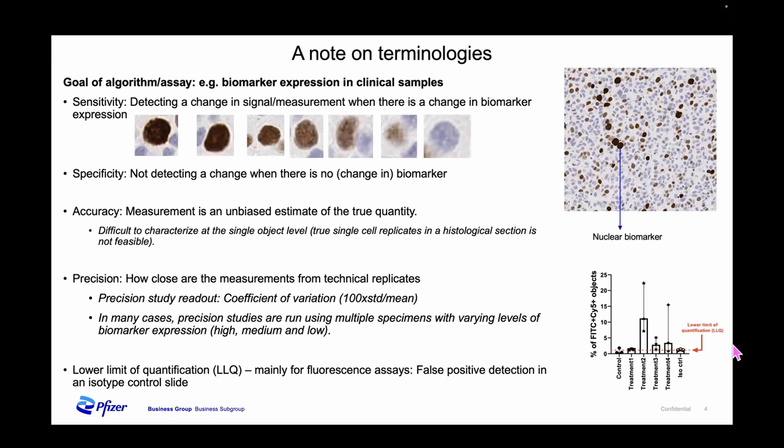Precision is a measure we often talk about in this field — it's simply how close replicate measurements are to each other. In a reproducibility study with technical replicates, you ask how tight the coefficient of variation, or CV, is — which is simply calculated as the ratio of standard deviation to mean. That's a measure very widely used in this field.